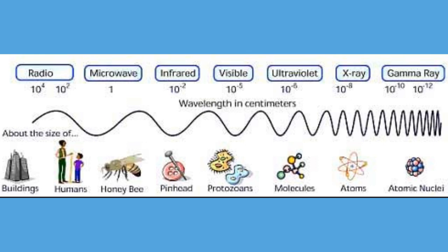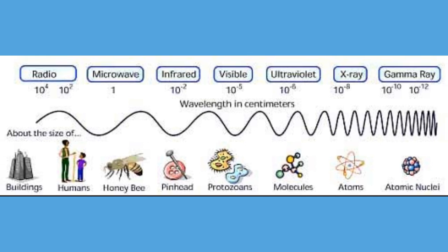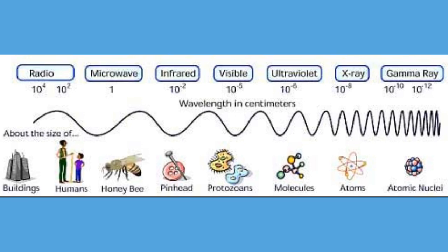Before we get into radio telescopes, we should understand what radio waves are. Radio waves are a type of electromagnetic radiation with wavelengths in the electromagnetic spectrum longer than infrared light, microwaves, or visible light. The wavelength of radio waves ranges from 1 millimeter to 10,000 kilometers.